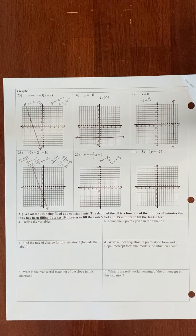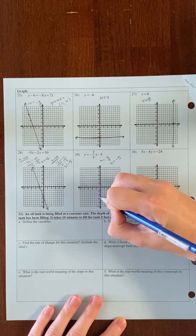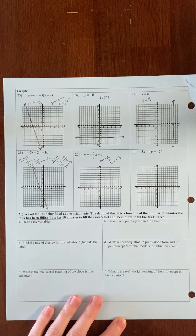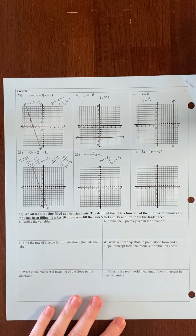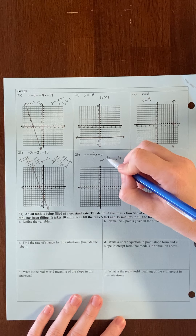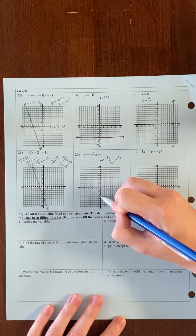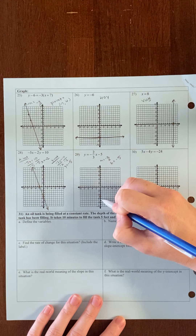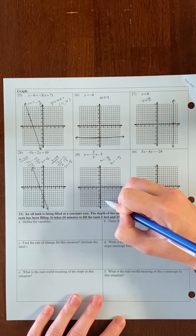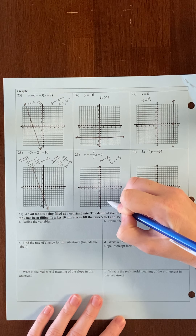Number 27 is the opposite — this is our vertical line, the other special case, because it's x equals a number. It's an undefined slope, a vertical line. So I'm going to go on the x-axis to positive 8 and then draw a vertical line going through that point.